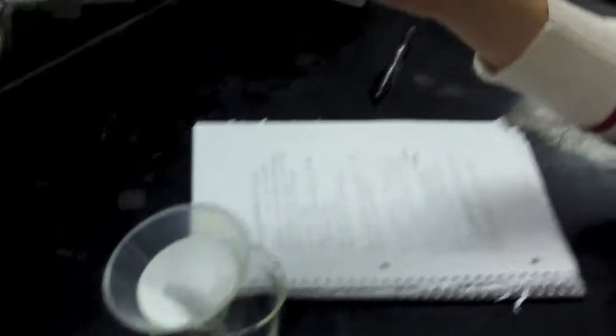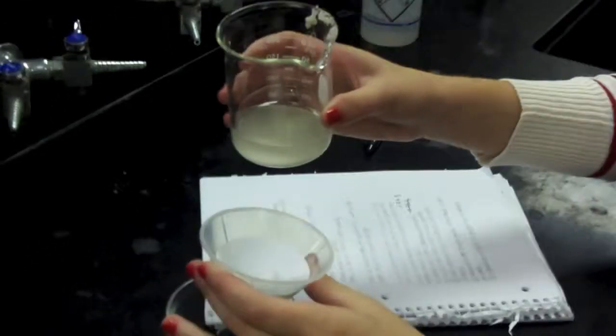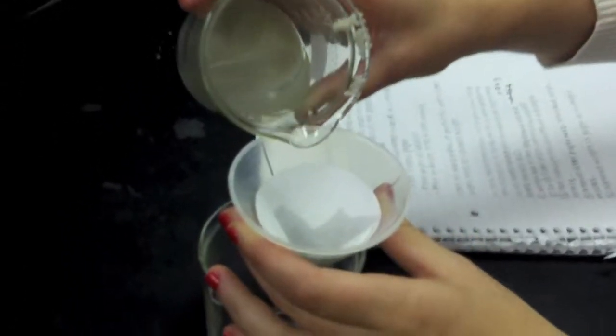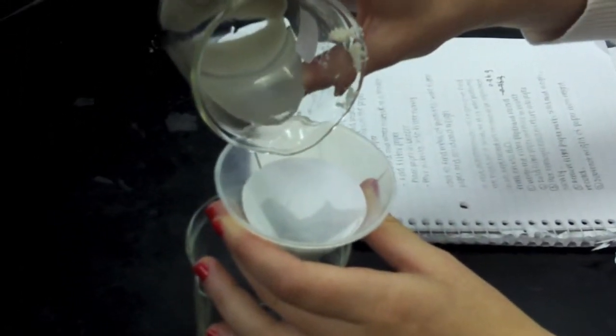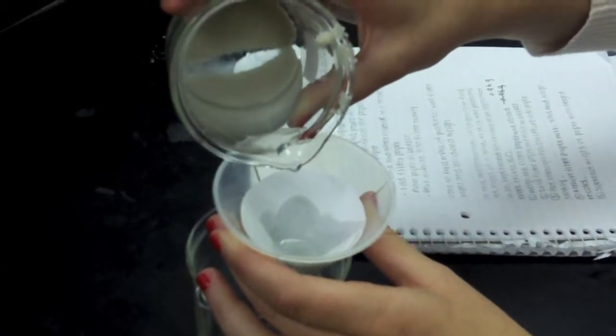Now it's time to actually pour your heterogeneous mixture into the funnel and filter paper. Slowly, so that it doesn't overflow or anything, pour the mixture in.